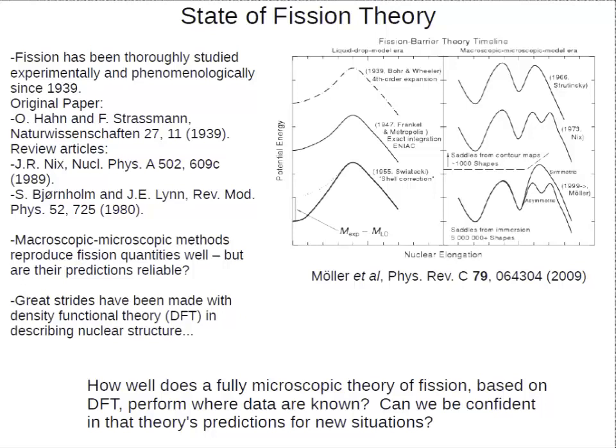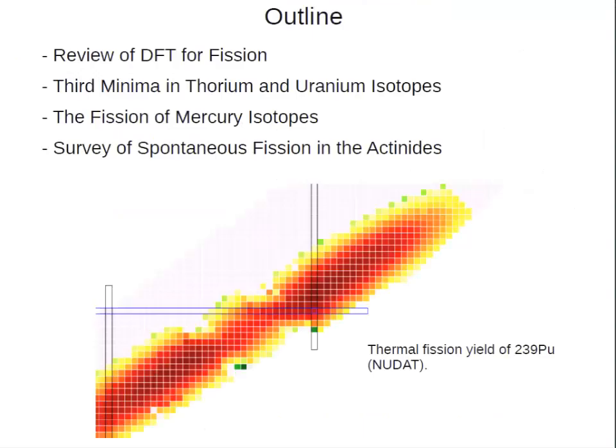As single particle effects are added on top of that liquid drop picture, you discover that there's a more complicated barrier structure between where the nucleus is in its ground state and where the two fragments have split apart. We want to understand this from a completely microscopic perspective — can we just take a basic understanding of how protons and neutrons interact with each other and have a predictive model for what fission observables will look like? What will the fragments look like? What will the spontaneous fission half-lives look like?